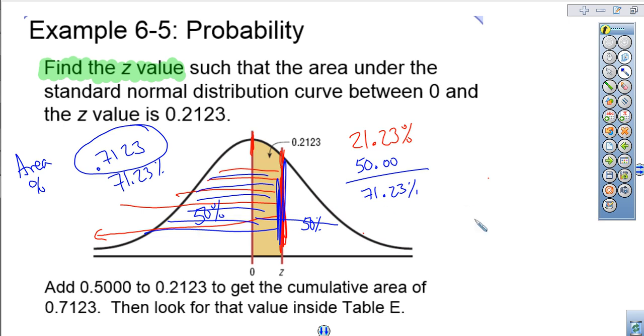So just to bring us back to the last problem there, we bring that percentage back over, and we'd find out that that is the z-score for that particular value right there. And that z-score to be equal to 0.56.